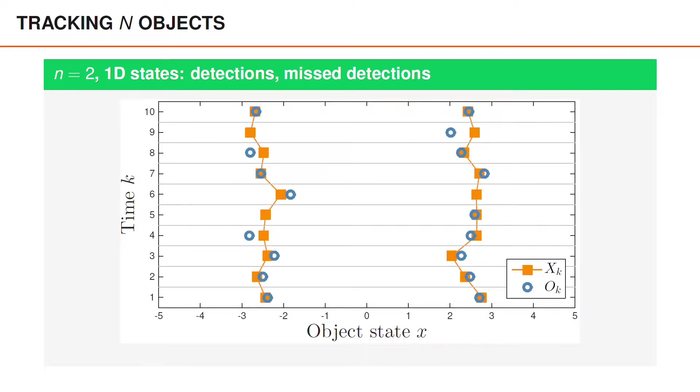We have noisy object detections shown here as blue circles and there are also misdetections which we can see for the object on the left at time 5 and time 9 and for the object on the right we have a misdetection at time 6. And there are also clutter detections or false detections which are illustrated here by red triangles. So the purpose of N-object tracking is to process these detections and estimate a posterior density for the object states. However, we don't know the true object states and we do not know which detections are from objects and which are clutter.